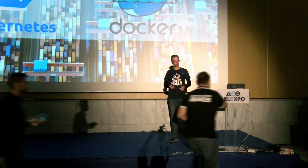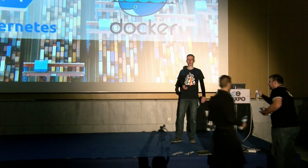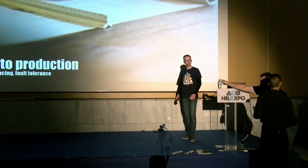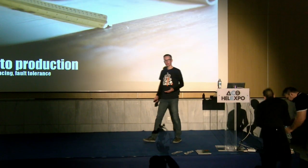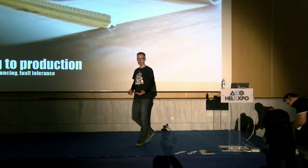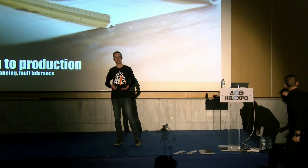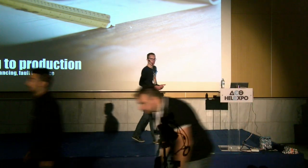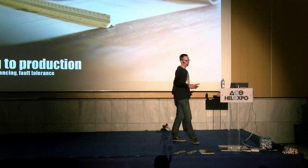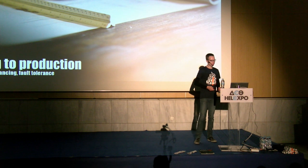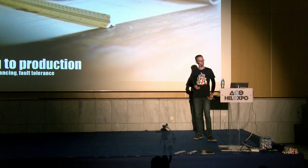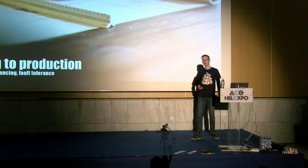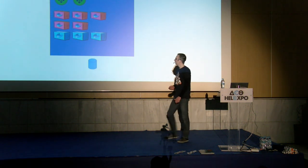Kubernetes runs Docker images, so I have to mention Docker, but we won't go into detail. If you're using Docker images and you see the power of running them on your local machine without installing dependencies, and then you run them on a server and want to move to production, you'll face challenges around scaling, load balancing, and fault tolerance.